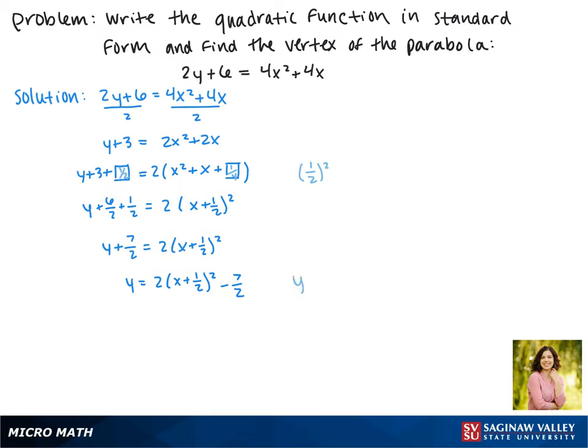Remember the general form here is y equals a times x minus h squared plus k, where the vertex is at h, k. So the vertex here is negative 1 half, negative 7 halves.